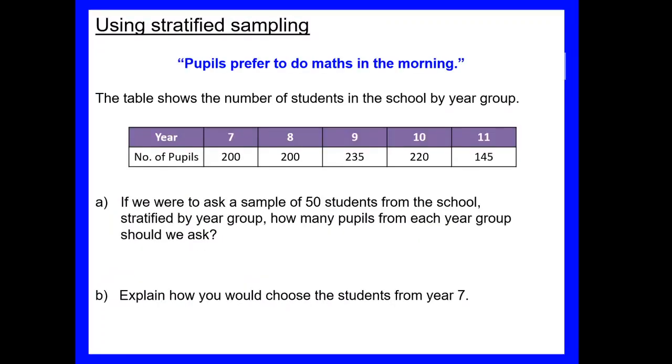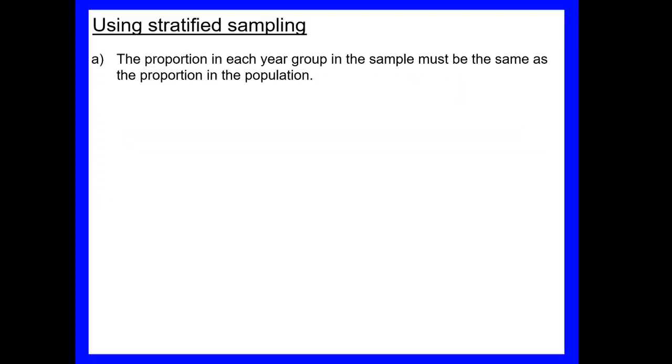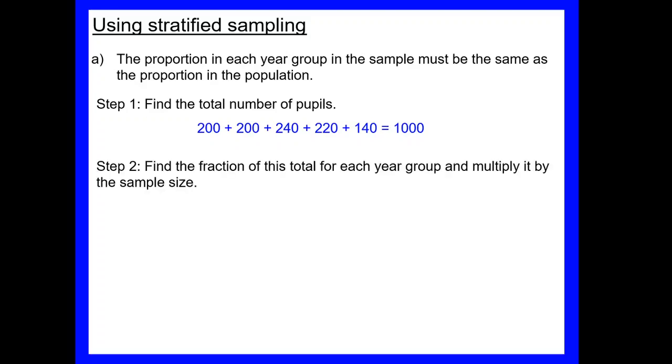Okay, so stratified sampling then. We've given a hypothesis there: pupils prefer to do maths in the morning. The table shows the number of students in school by year group and we want to take a sample of 50 students. So we're not going to go and ask every single child in the school do they prefer to do maths in the morning, we're going to take a representative sample of 50 students stratified by year groups. We now have to work out how many pupils from each year group we should ask. So remember we said stratified sample is where the fraction of the population in that year group is going to be the same as the fraction we take of our sample. So first step is to find the total number of pupils. So we might be told this in the question, we weren't told at this time, so we're going to need to work that out. So if we add up all the students, there are a thousand students in this school. Then we need to find the fraction for each year group.